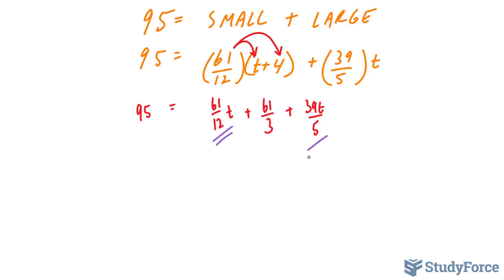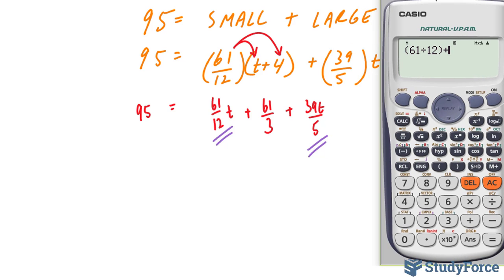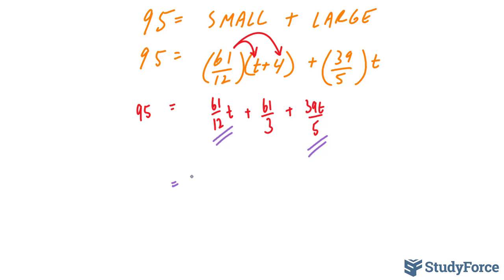These two terms, this one and this one, can be combined, where we have 61 over 12 plus 39 over 5, and this gives us 773 over 60. Of course, your calculator might give you the decimal version of that, but I'm just going to use this because it's more accurate. 773 over 60, don't forget the t, plus 61 over 3.